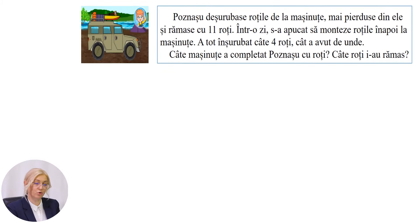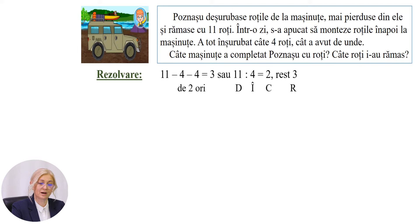În continuare, voi relata o povestioară matematică. Poznașul deșurubase roțile de la mașinuțe. Mai pierduse din ele și rămase cu 11 roți. Într-o zi s-a apucat să monteze roțile înapoi la mașinuțe. A tot înșurubat câte 4 roți, cât a avut de unde. Câte mașinuțe a completat poznașul cu roți, câte roți i-au rămas. Cum putem afla? 11 minus 4 de 2 ori este egal cu 3. Sau 11 împărțit la 4 este egal cu 2, rest 3. În care 11 este de împărțitul, 4 împărțitorul, 2 câtul și 3 restul.